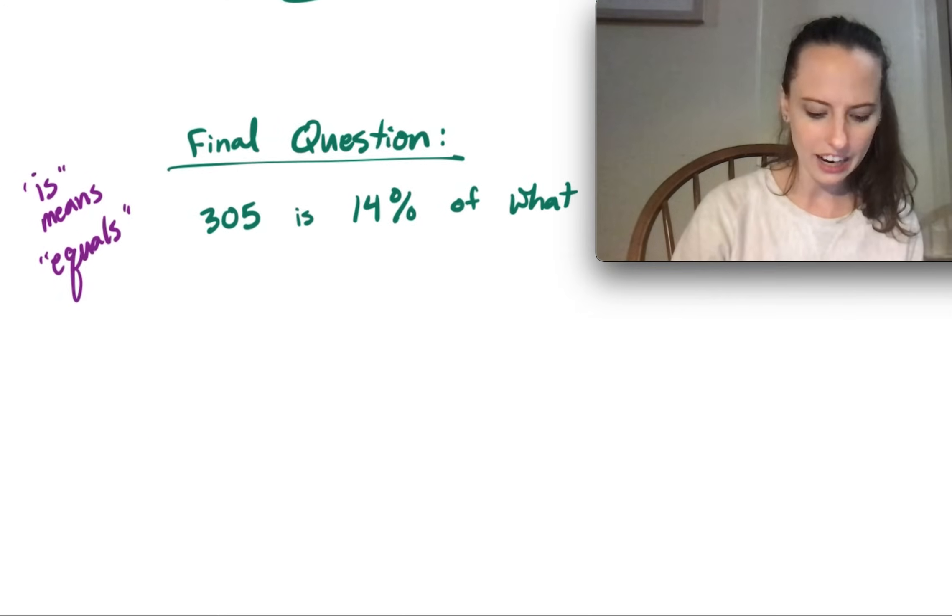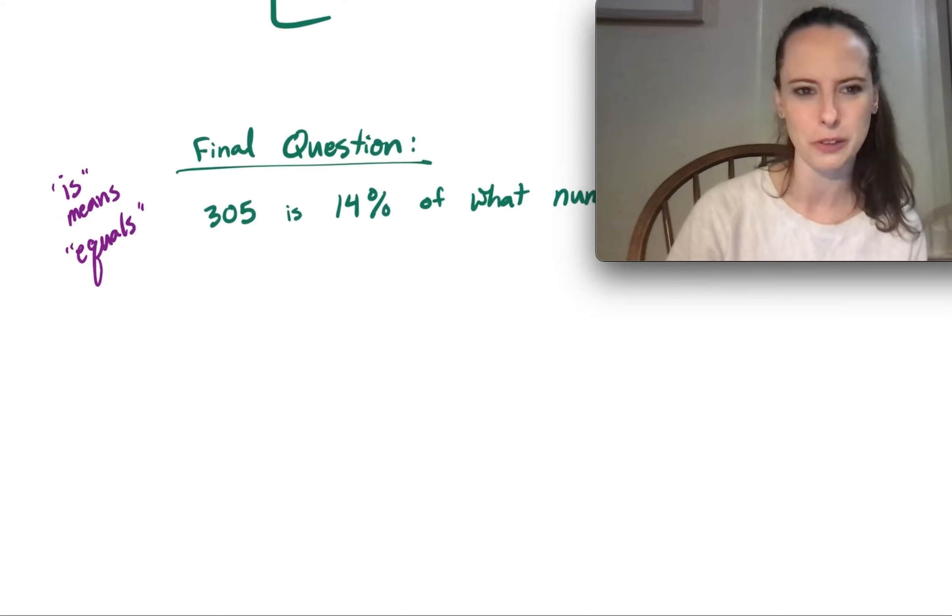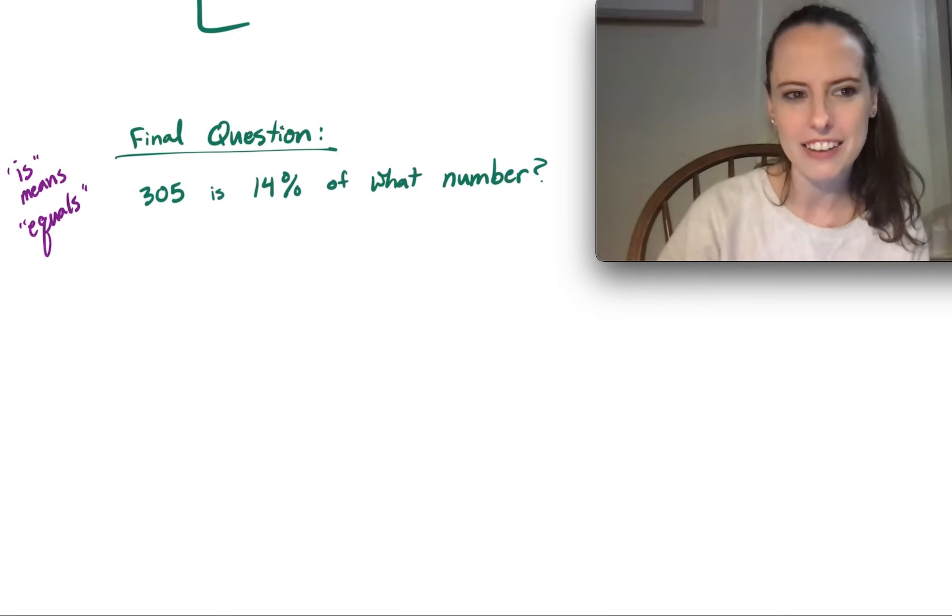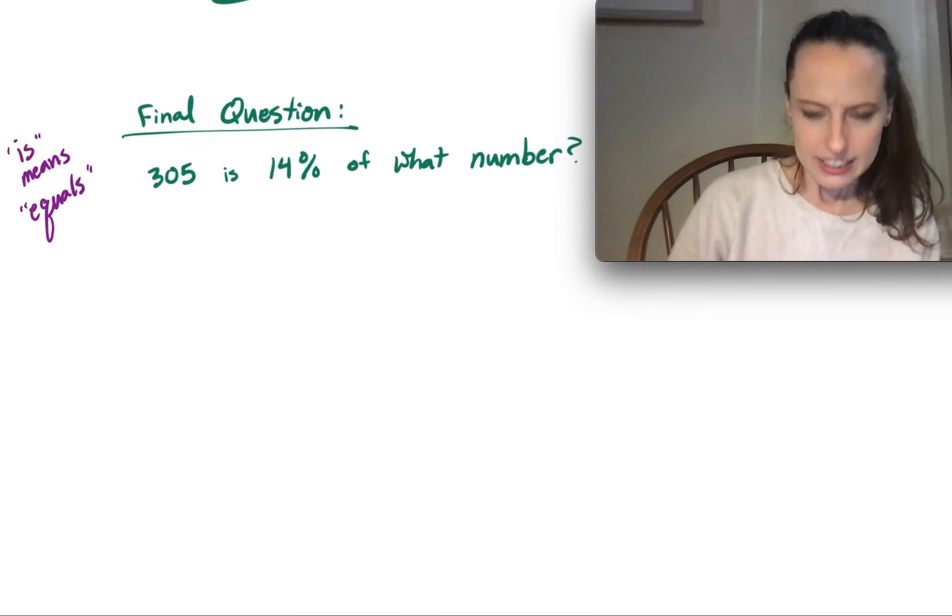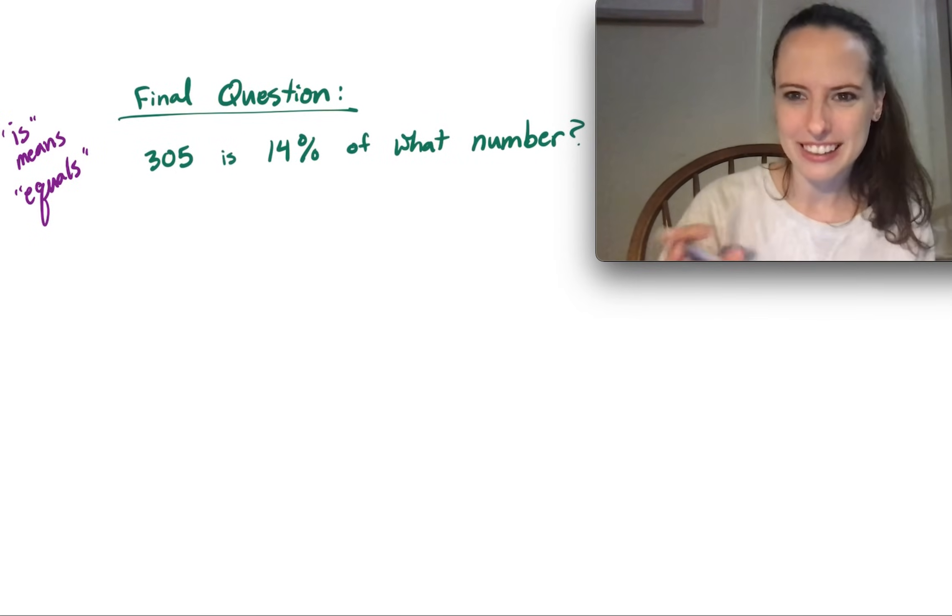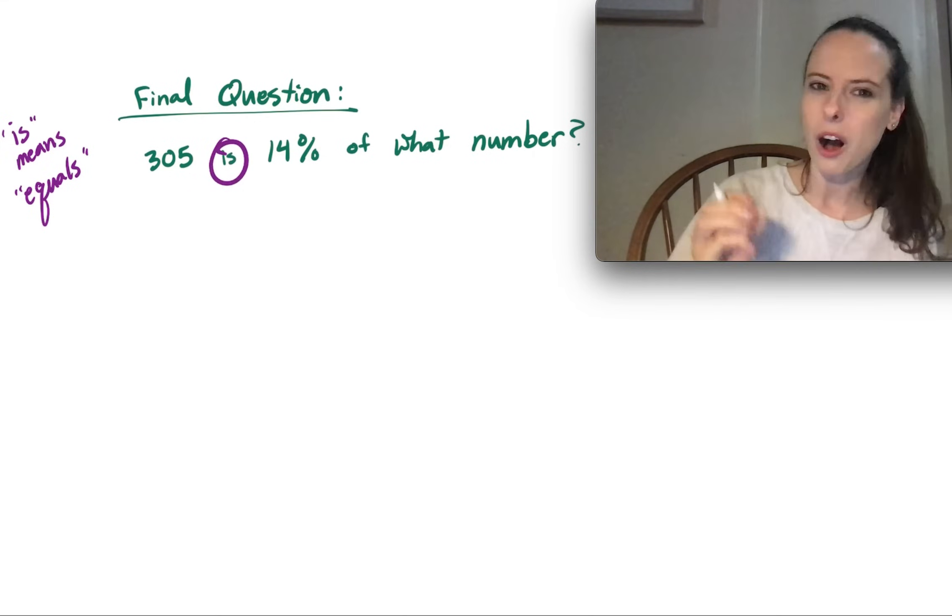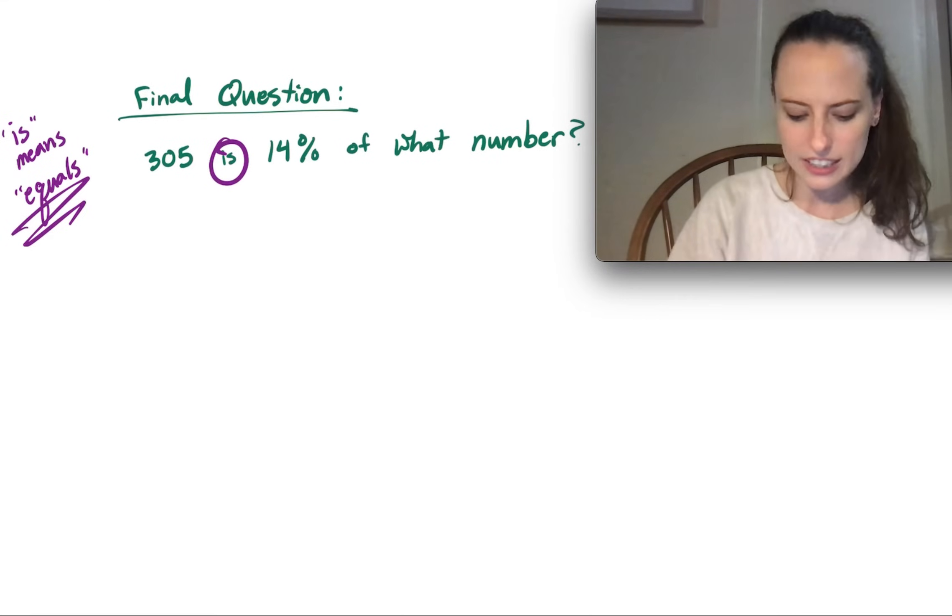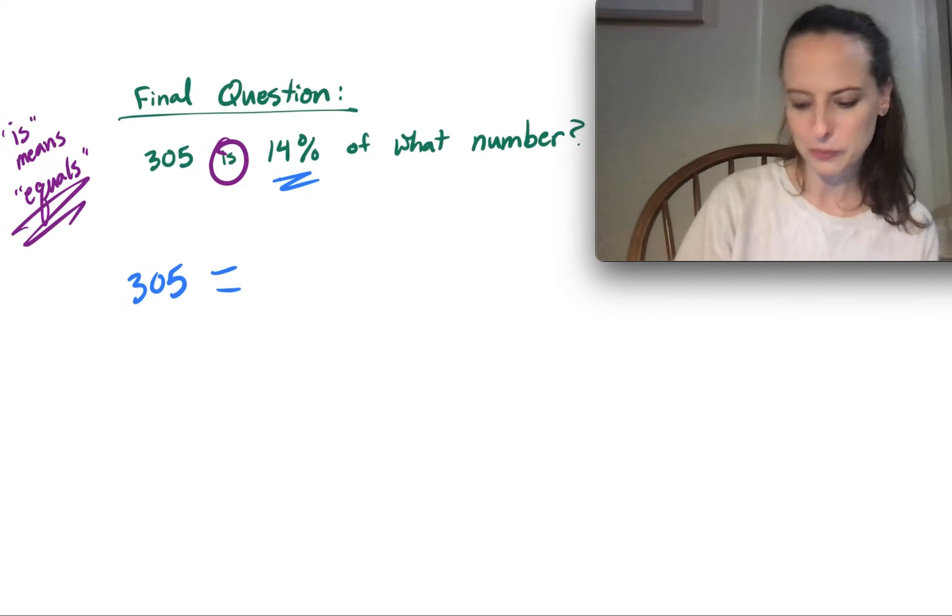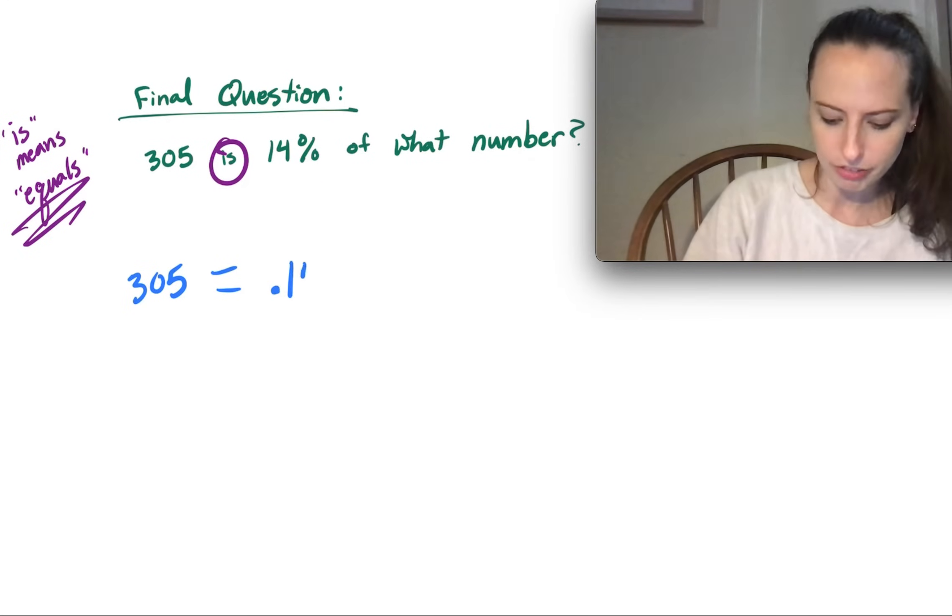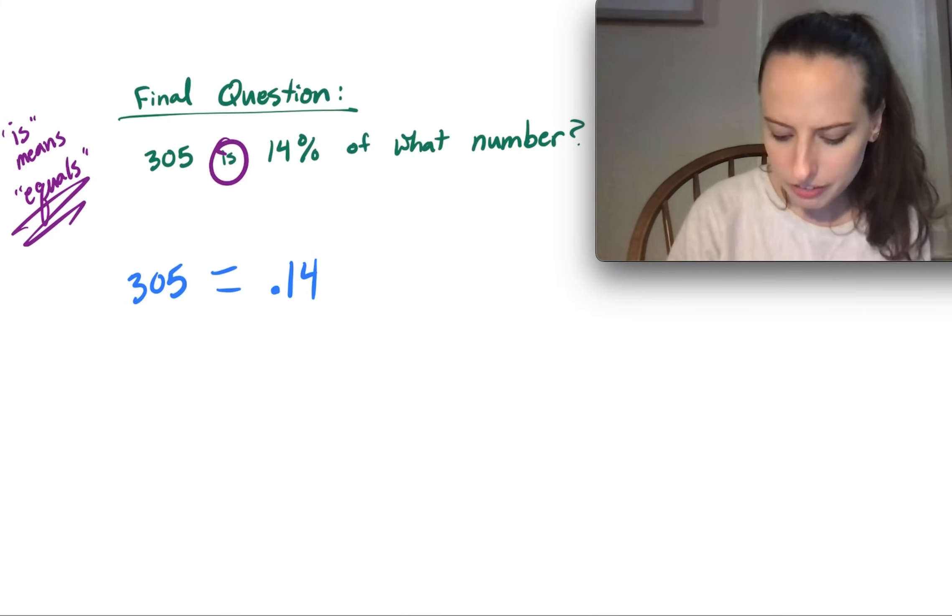And finally, we have a final question. This is more of like a word problem. 305 is 14% of what number? Well, to answer this, it's kind of helpful to think about how we set up equations. And in math, the word 'is' always stands for the equal sign. So is means equal. So we could translate this whole thing as 305 equals - and then for the 14%, we know we can convert that to a decimal .14. And then the of what number?